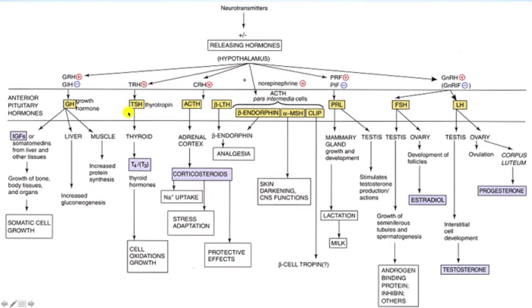Now let's go to the basophils. The thyrotrophs produce thyroid stimulating hormone, stimulated by thyrotropin releasing hormone released from the paraventricular nuclei. TSH acts on the thyroid gland to produce T3 and T4 in a 20-to-1 ratio in the blood, meaning T4 is 20 times as abundant as T3. This is because T3 is three to four times as potent as T4. These hormones lead to cellular oxidation and growth, essentially altering the basic metabolic rate in a positive way.